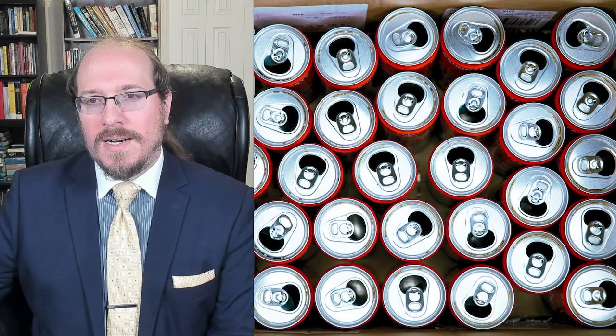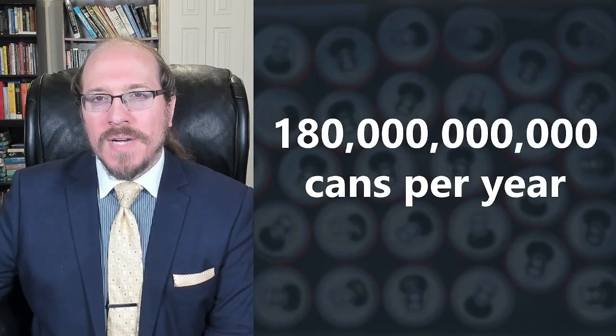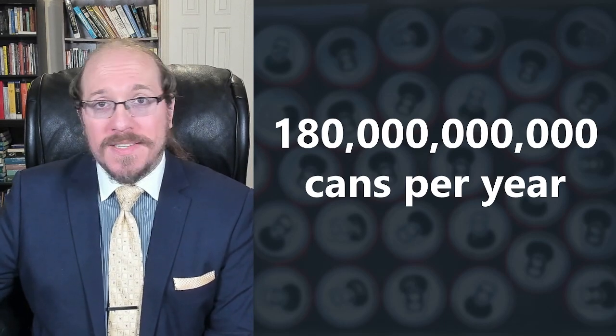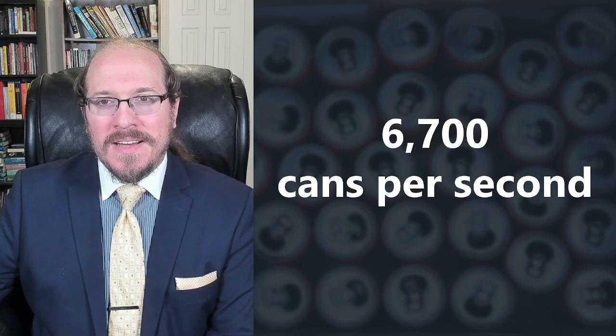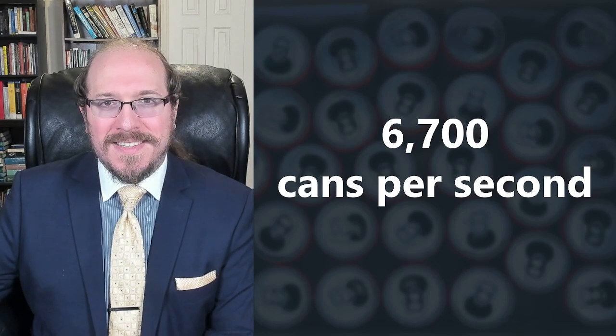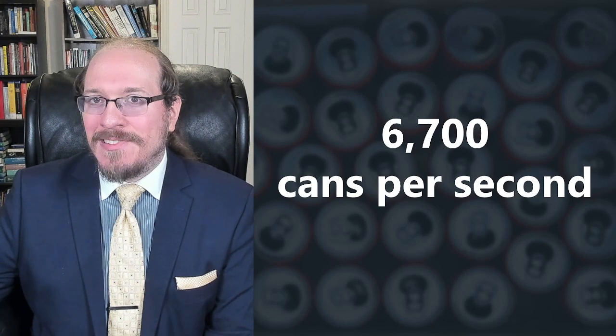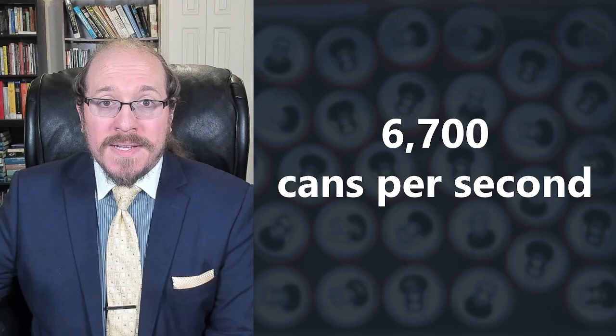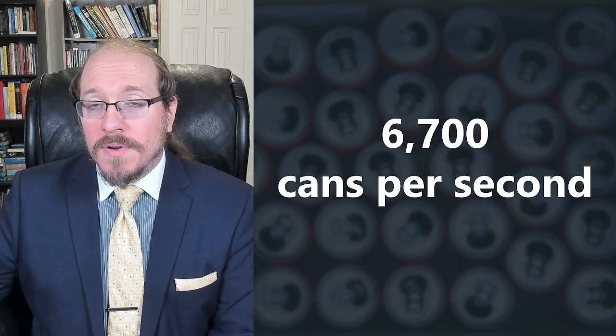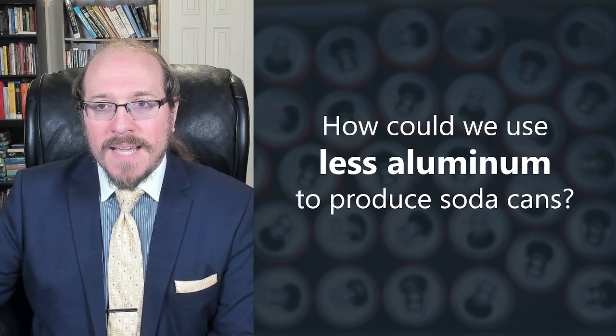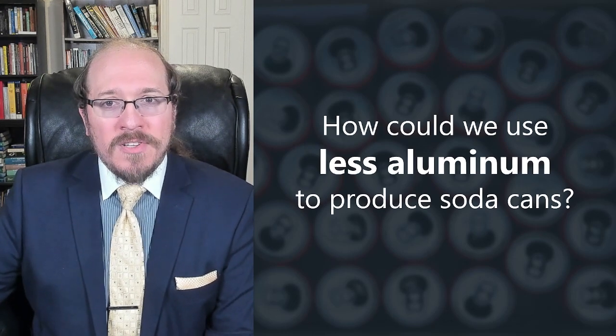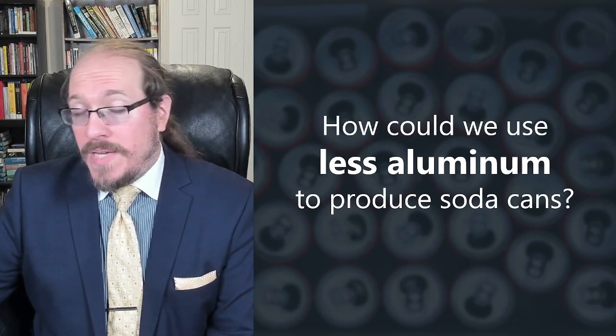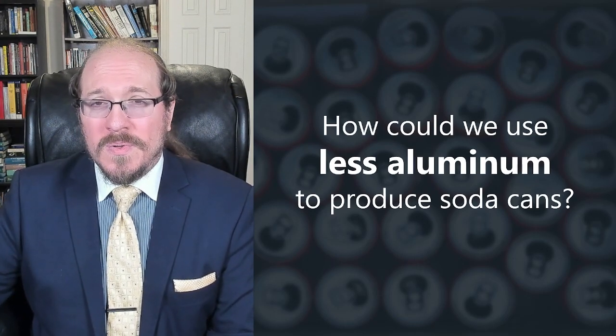According to theworldcounts.com we use about 180 billion aluminum cans every year for soda and other drinks. That comes out to about 6700 cans per second. When you think about that you can imagine it takes a lot of energy to produce all those cans. So being the environmentally friendly consumer that I'm sure you are you might be wondering is there any way we could save some of that energy and perhaps use less aluminum to manufacture our soda cans? I mean we could use calculus to find a minimum of some kind but where do we even begin?